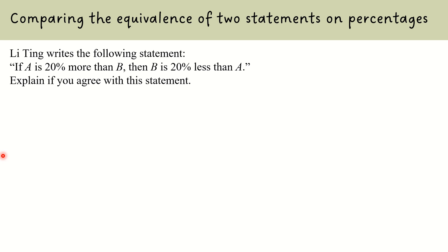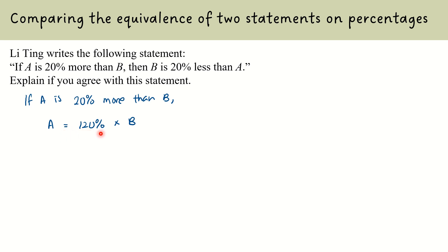Let's figure out what it means for A to be 20% more than B. If A is 20% more than B, then B is 100% and A is 120%, so A equals 120% times B. Converting to a fraction: 120 over 100 times B gives 6 over 5 times B. Now, does B being 20% less than A hold? If A is 100%, then B should be 80%.